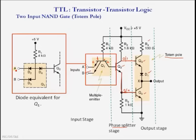When any one of the inputs is low, or both inputs are low, the base-emitter diode becomes forward biased and the base-collector diode is in reverse bias, so Q1 is in the on state. A low potential is applied to the base terminal of Q2, so Q2 is in the off state. The base voltage for Q3 will be logic 1 and the base voltage for Q4 is logic 0, so Q4 is off and Q3 is on, giving an output of logic 1.